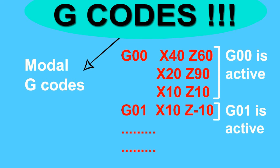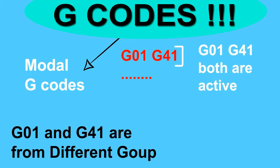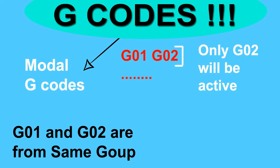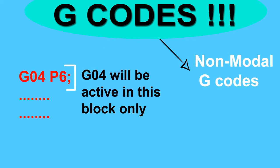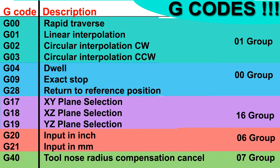It is important to note that if two or more modal codes are written in the same block from different groups, they will both remain active. But if two or more modal codes from the same group are in the same block, the last one will replace all others. Non-modal codes, on the other hand, are called one-shot codes — they are active in a single block only. For example, G04, which is used for a dwell period.